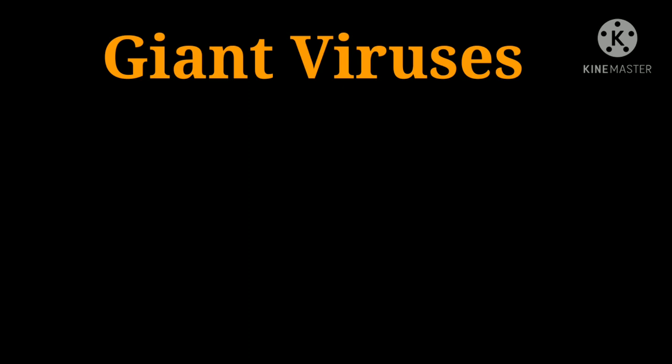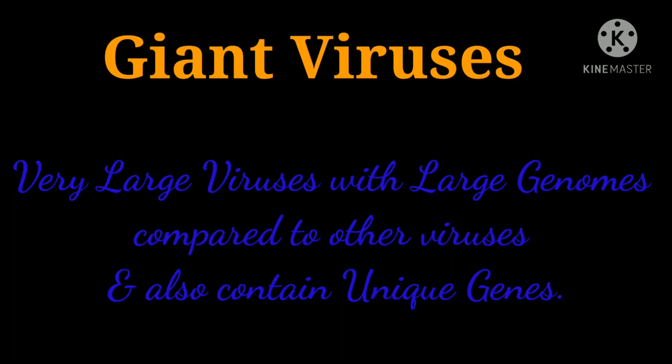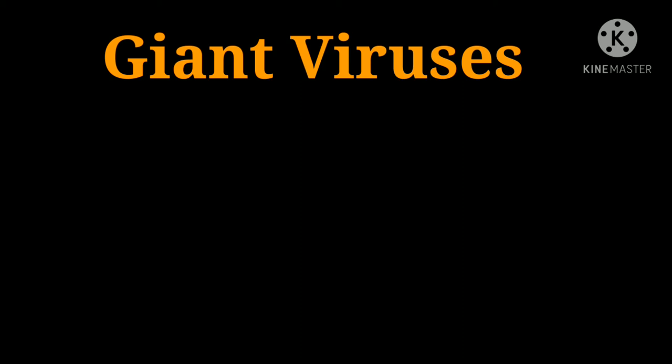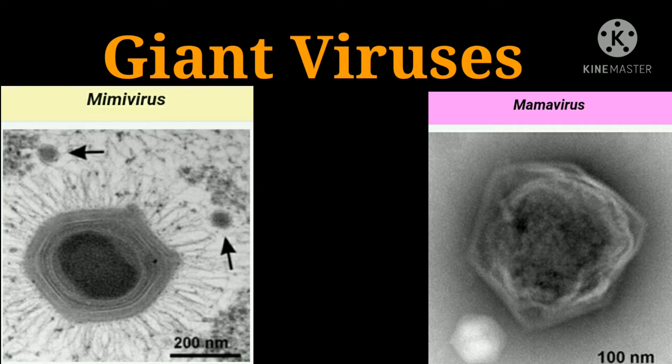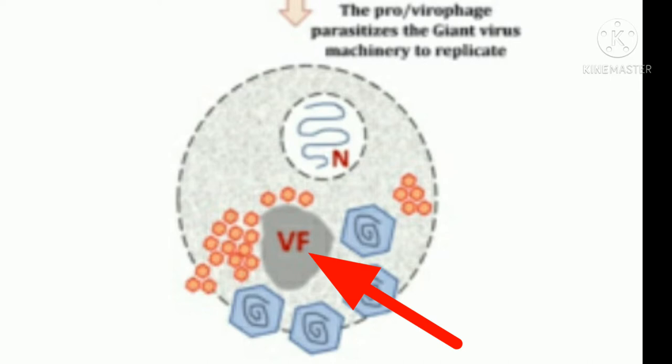Next, we will see what are giant viruses. Giant viruses are very large viruses with large genomes compared to other viruses and also contain unique genes. Examples include Mimivirus, Mammavirus, etc. Giant viruses replicate within the virus factories located within the cytoplasm of the infected host cell.